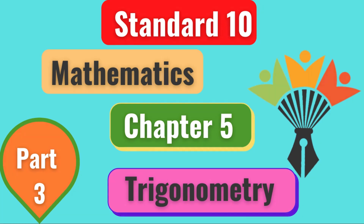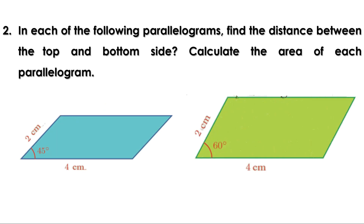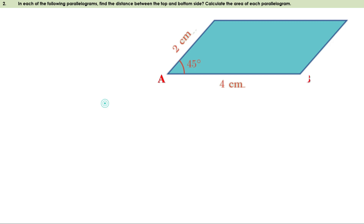Welcome to Maths Companion. In the last video we did some problems using the ratios of triangles with angles 30-60-90 and 45-45-90. There was a homework. Let us take the answers now. In each of the following parallelograms, find the distance between the top and bottom side and calculate the area of each parallelogram. Let us take them one by one.